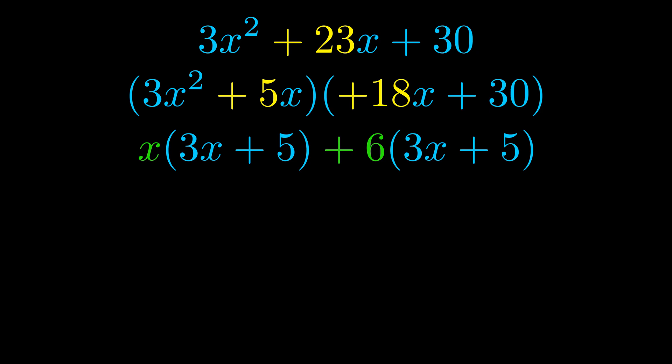Notice also how what remains inside of the parentheses is the same in both cases. The blue values are the same. Those blue values will become one of our factors, and we will combine the two green values, the GCFs that we pulled out, to get the other one. And that is our fully factored equation.